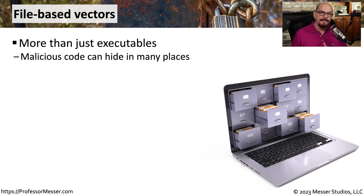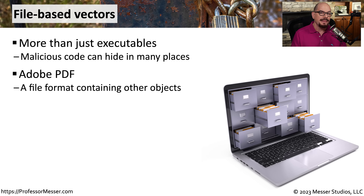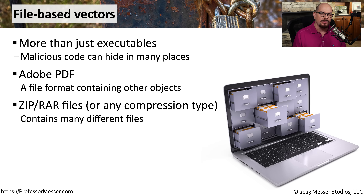It may be obvious that files we run on our systems could be a potential threat vector, and this is certainly the case for executables, since that's software that actively runs within the memory of your system. But an executable is not the only type of threat vector in a file format. An Adobe PDF is a very good place to embed malicious software, because it's effectively a holding place where you put other types of objects — text, images, and in some cases even scripting. The attacker may also hide a threat within an existing set of compressed files using ZIP, RAR, or any compression type.